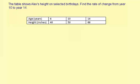Here we can see age is this first row: 6, 10, 14. We want the rate of change from year 10 to year 14.